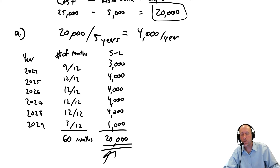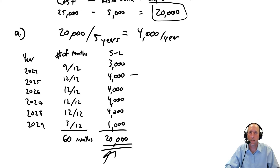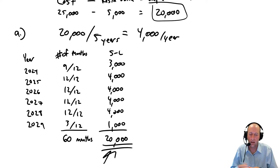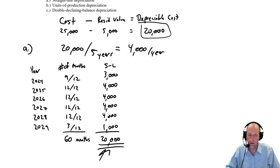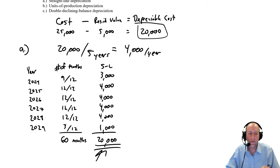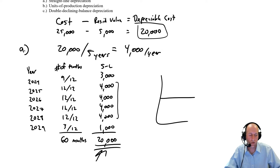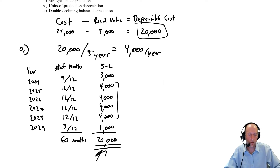This schedule also feeds journal entries. Every one of these amounts would represent a year-end adjusting entry: debit depreciation expense, credit accumulated depreciation. We weren't asked for that, so I won't do the journal entries at this time. So we've done straight line — pretty straightforward. Why do they call it straight line? It's the same for every full year. If you were to graph this on a chart, it would look like a straight line: $4,000 every full year. That's why they call it straight line depreciation.